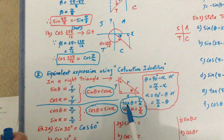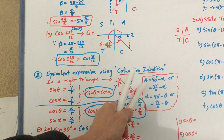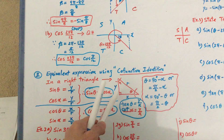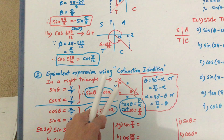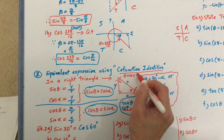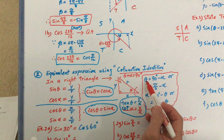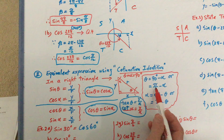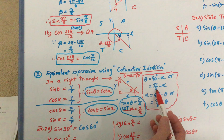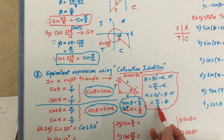Or the other way around: if I'm taking the tangent of alpha, then I have to get the cotangent of theta. Because of this, and knowing that theta is always equal to 90 degrees minus alpha — since the sum of theta plus alpha always equals 90 degrees — solving for theta means theta equals 90 degrees minus alpha, or in radians, pi over 2 minus alpha. Similarly, alpha equals pi over 2 minus theta.